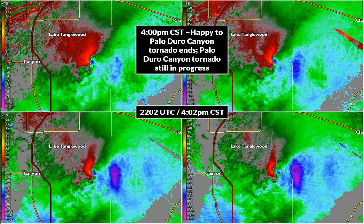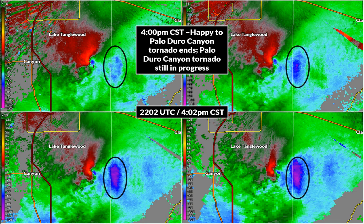It's now 4:02 p.m. Central Standard Time. Just a couple minutes before this, the Happy-to-Palo Duro Canyon tornado lifted. The Palo Duro Canyon tornado is still in progress. We see that area of strong, tight rotation just to the southeast of Lake Tanglewood.